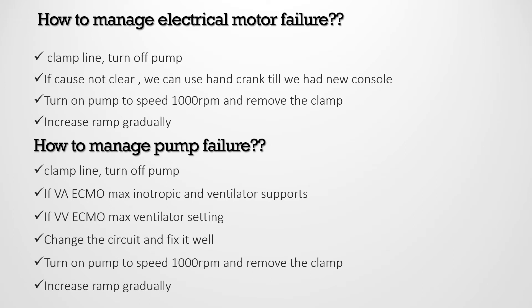To manage electrical motor failure: clamp the line, turn off the pump, and if the cause is unclear, use a hand crank until a new console is available. With the hand crank, remove the clamps and achieve flow manually. After resolving the issue and connecting to a new console, turn on speed to 1000 RPM, then remove the clamp and increase the ramp. To manage pump failure: clamp the line, turn off the pump. If on VA ECMO, maximize inotropes and ventilatory support. Change the circuit, turn on the pump to 1000 RPM, remove the clamp, and gradually increase the ramp.